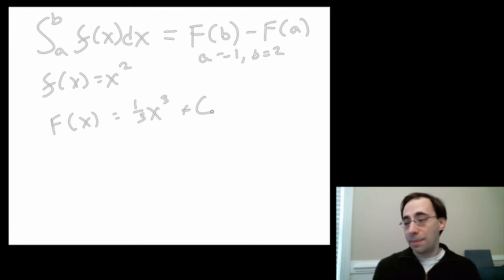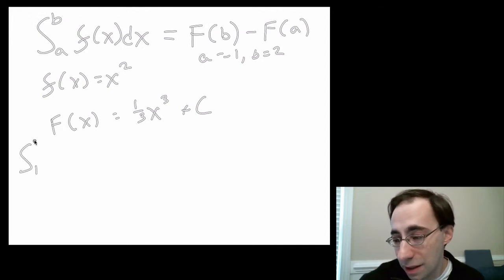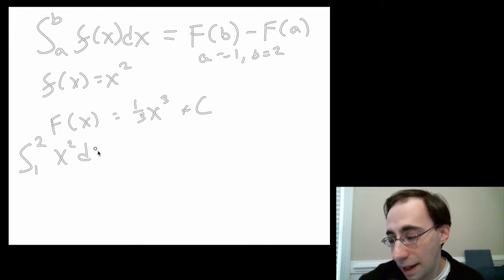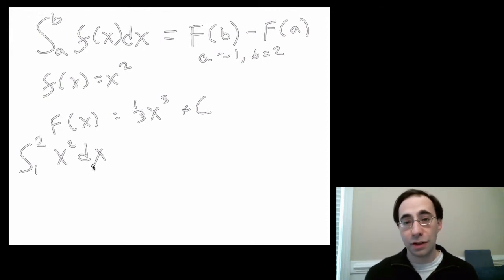Now we can actually finish this up. What this says is that the definite integral of x² from 1 to 2, which you can write as this, 1 to 2, x² dx. That's how you read this. The integral from 1 to 2 of x² dx.